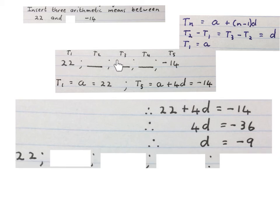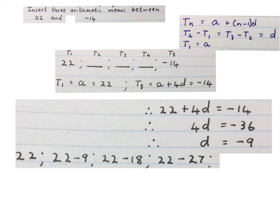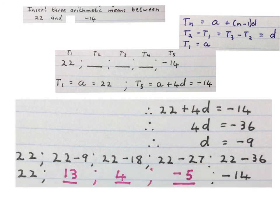Then you go to your original planning which you've set up. You write your 22. Your next term will be 22 minus 9. The next term 22 minus 18. The next one 22 minus 27, and then 22 minus 36. Then you write your final answer.